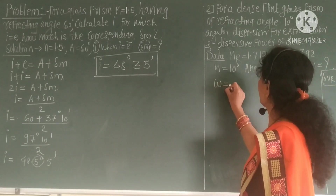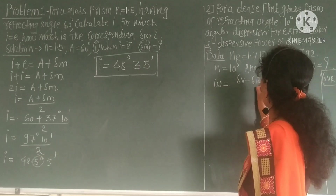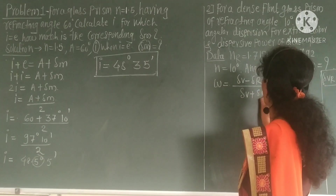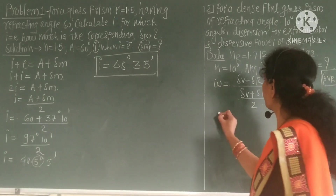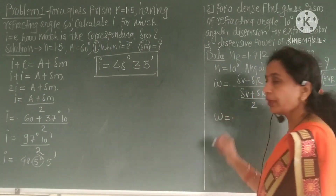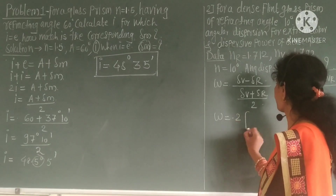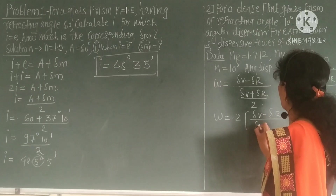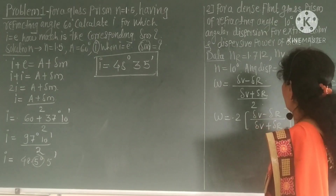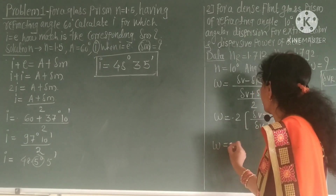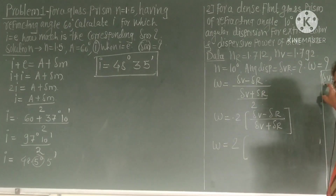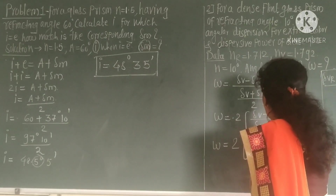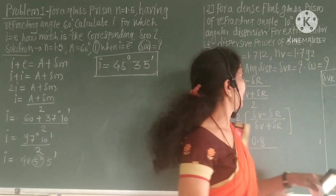The formula for dispersive power is: omega equals (δv − δr) divided by (δv + δr)/2, which can be written as omega equals 2(δv − δr) divided by (δv + δr). Substituting: omega equals 2 × 0.8 divided by (δv + δr).